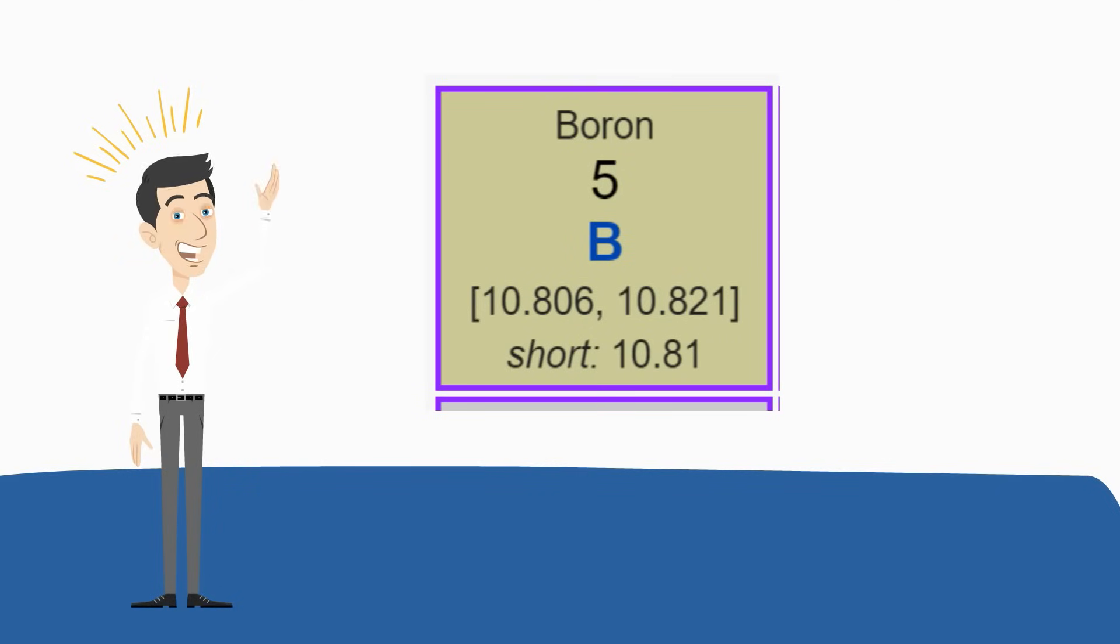Okay, let's look at another example. Let's look at boron. Boron has a symbol B.